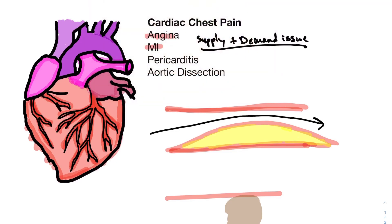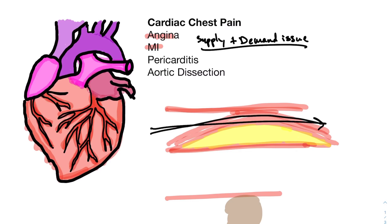Anginal chest pain progresses over time. Initially you might walk 10 blocks without a problem. As you build up more narrowing, you can only do eight blocks before feeling chest discomfort. As the narrowing increases, you go from chest pain with exertion to chest pain with minimal activity to chest pain at rest — that's the progression of angina from stable to unstable. The way to treat this is to place a stent to push the artery open and maintain blood flow past the blockage. In a cardiac catheterization, a catheter is snaked up to the heart and inserted where the blockage is to open it up.